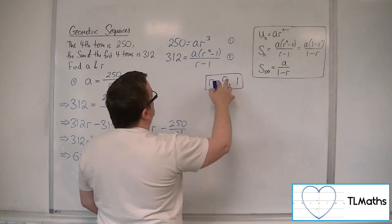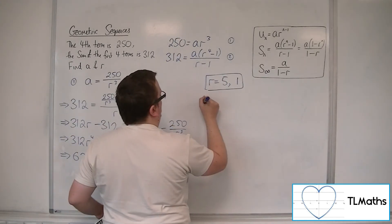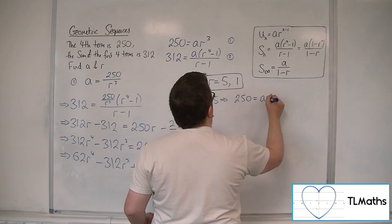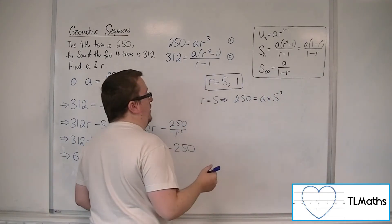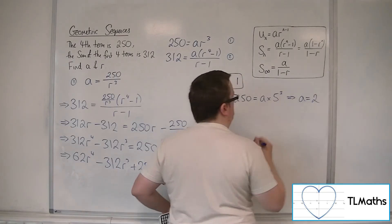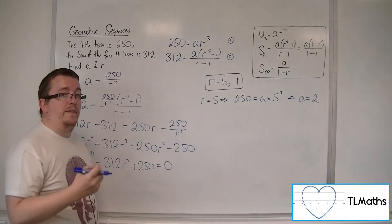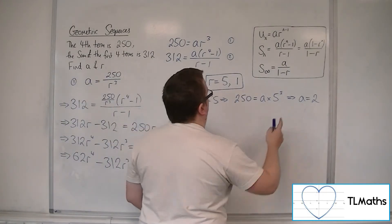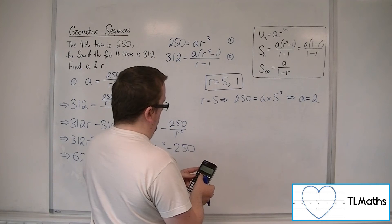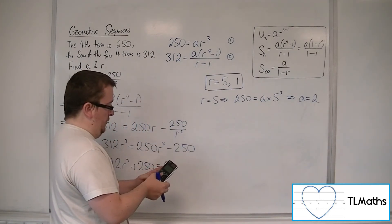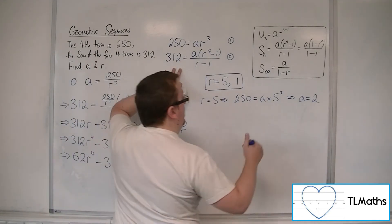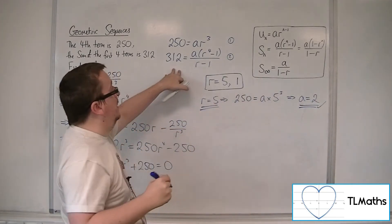We're going to substitute both values into equation 1. When R is 5, we get 250 equal to A times 5 cubed. Since 5 cubed is 125, we get A equals 250 divided by 125, which is 2. Checking this in equation 2: 2 times (5 to the 4 minus 1) over (5 minus 1) gives 312. So this solution certainly works.